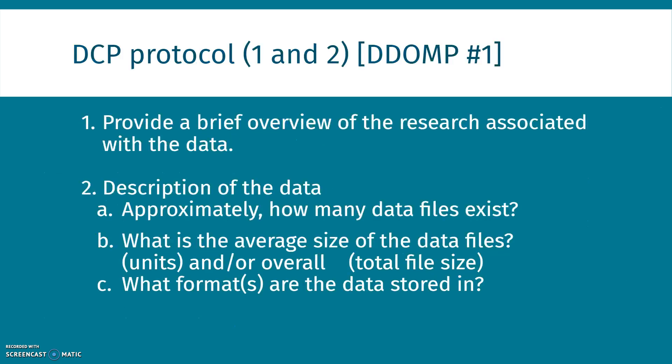The first question from a data curation profile protocol matches really well to the DDOMP number one. You provide a brief overview of your research and then describe the data with how many files, average size of the file, and the formats that things are stored in. Those will all be mapped to DDOMP number one.